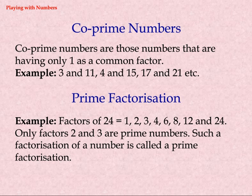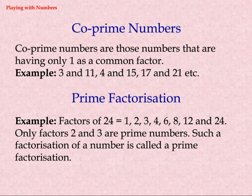Prime factorization — Example: factors of 24 are 1, 2, 3, 4, 6, 8, 12, and 24. Only factors 2 and 3 are prime numbers. Such a factorization of a number using only its prime factors is called prime factorization.